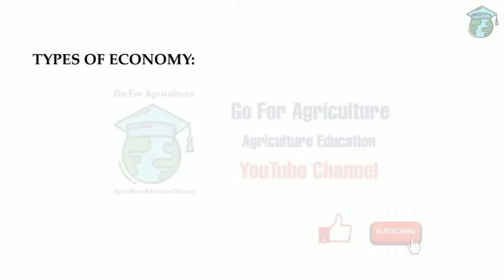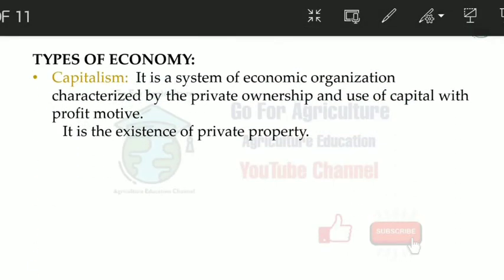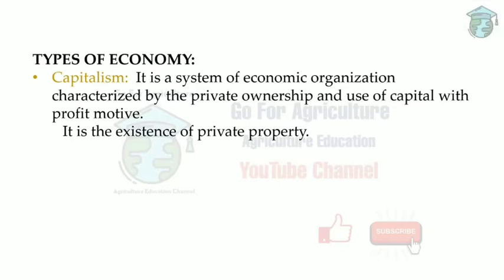There are three types of economies: capitalism, socialism, and mixed economy. Capitalism is a system of economic organization characterized by private ownership. For example, if you own private land, build a house, and your family lives there for your own private benefit — you're doing this for yourself. This is capitalism: private ownership, private property, and profit motive.